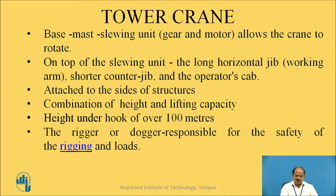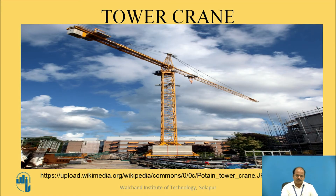Tower cranes consist of a base carrying a mast, which is a vertical column. There is a slewing unit that allows rotation in a horizontal plane. On top of the slewing unit is a long horizontal jib, and a shorter counter jib on the opposite side, along with the operator's cabin. Tower cranes lift loads attached to the sides of the structure. The combination of height and lifting capacity is characteristic of the tower crane, with height under hook of over 100 meters being possible. The rigger or dogger is responsible for safety of rigging and loading.